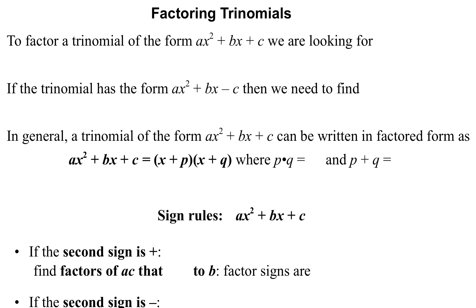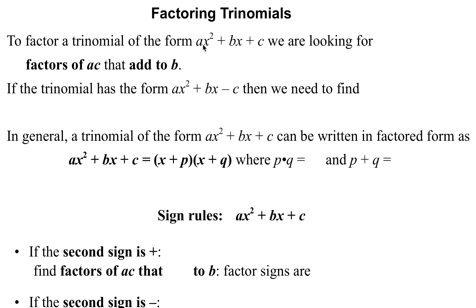Now here's where things get a little more difficult — factoring trinomials that are not perfect squares or difference of squares, where they have this format. They might have a number in front of your x² term. What you're going to do is look for factors of a and c, when multiplied together, that add to the middle term b. If the second sign is a subtraction, we want factors of a times c that differ by b rather than adding to b.